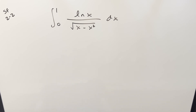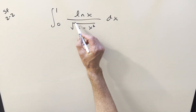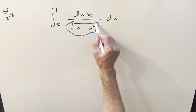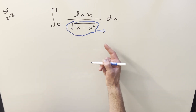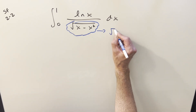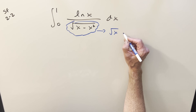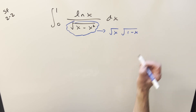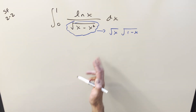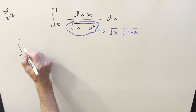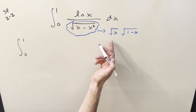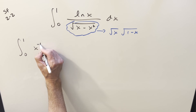I have a few different ways to do this one, but I really like this method. What I want to do to start is just deal with this denominator. We can factor that — factoring out x — and then we can break it up. So I can write this as square root of x times square root of one minus x. What that allows me to do is bring both of these into the numerator and write x to the minus one half.